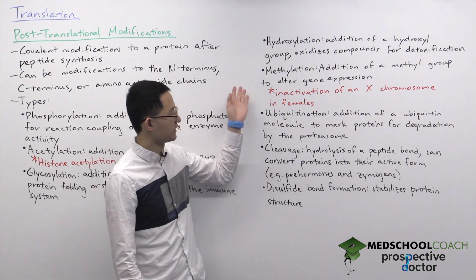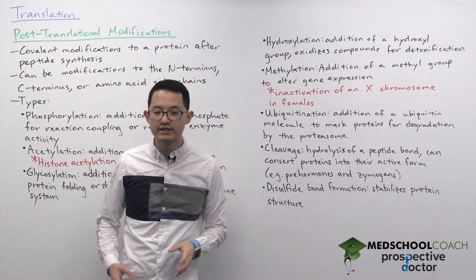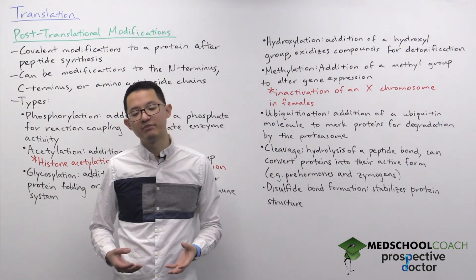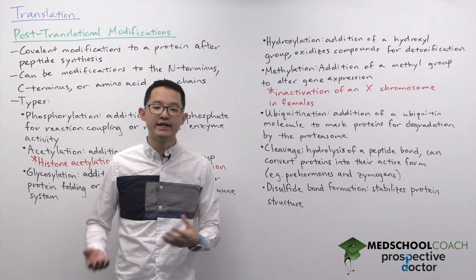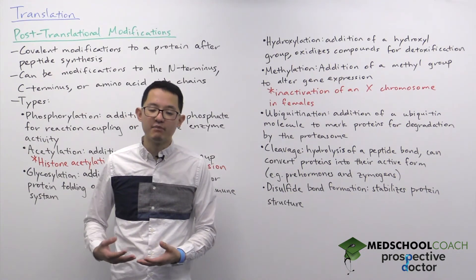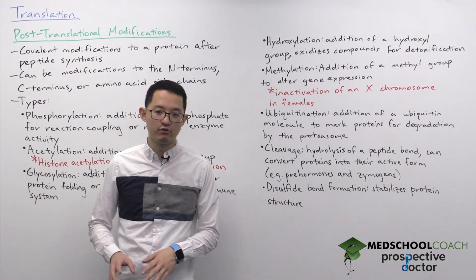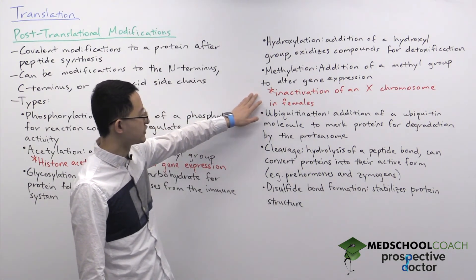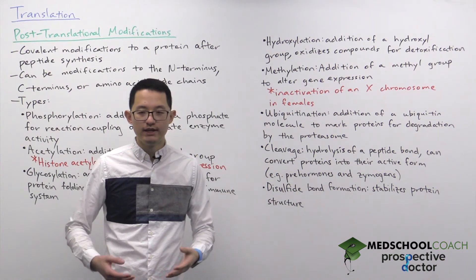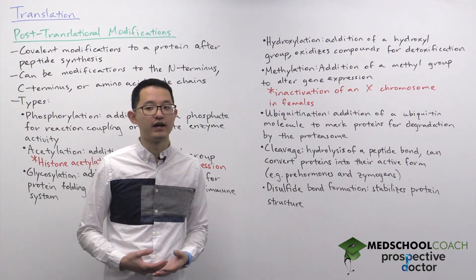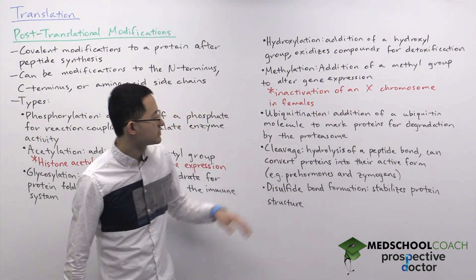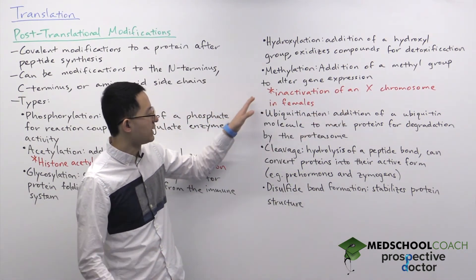Methylation is the addition of a methyl group, and similar to acetylation it can also alter gene expression. There are many examples of DNA being methylated — in some cases increasing gene expression and in others decreasing it, though more often than not DNA methylation decreases gene expression. A very famous example of decreasing gene expression is in females, where one of the two X chromosomes is inactivated in each cell for dosage compensation, ensuring females do not express too many proteins from the X chromosome. This X chromosome inactivation is carried out by DNA methylation.